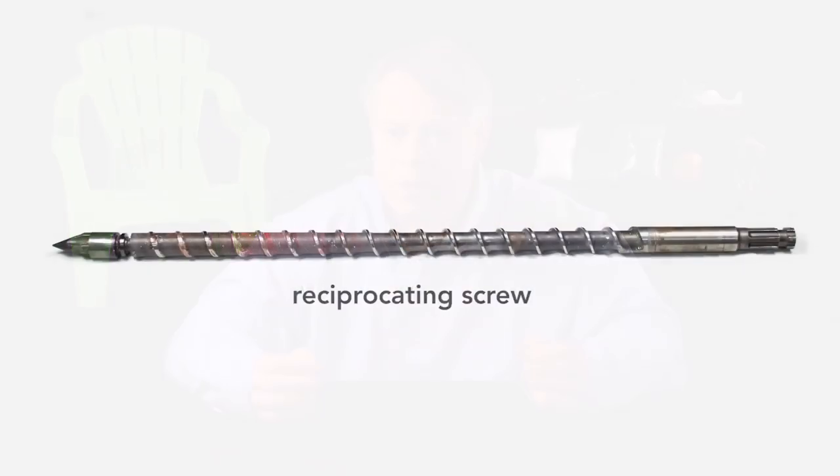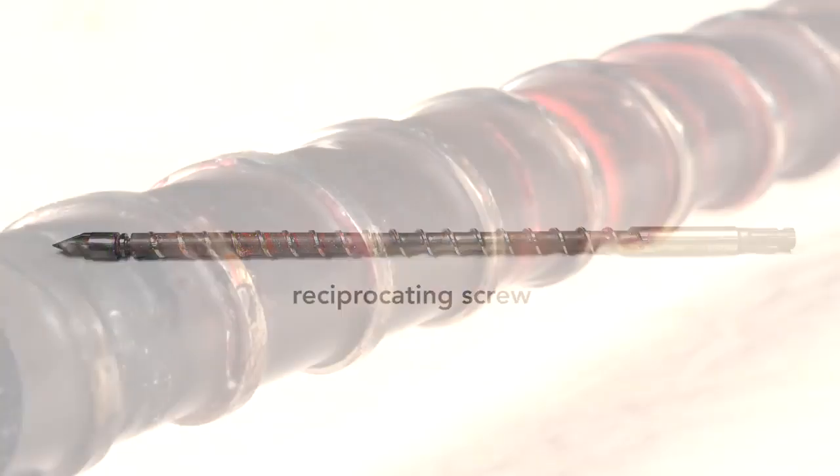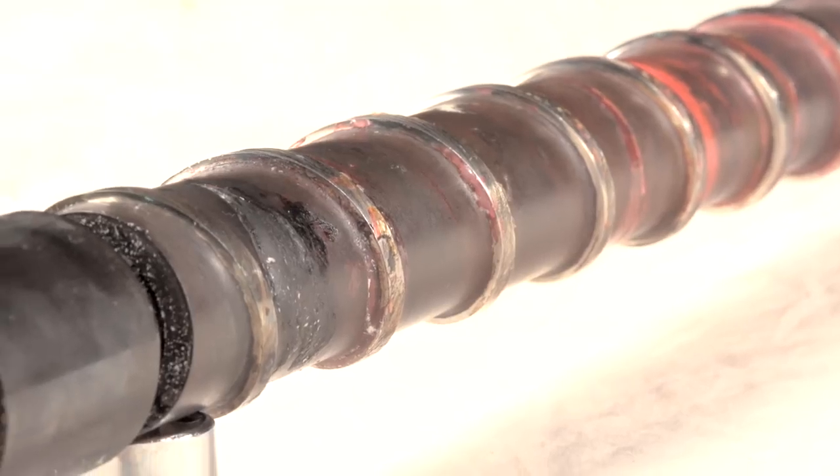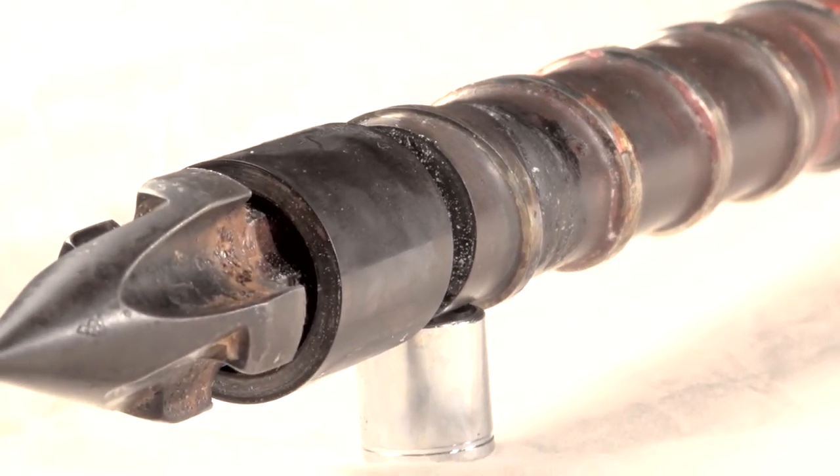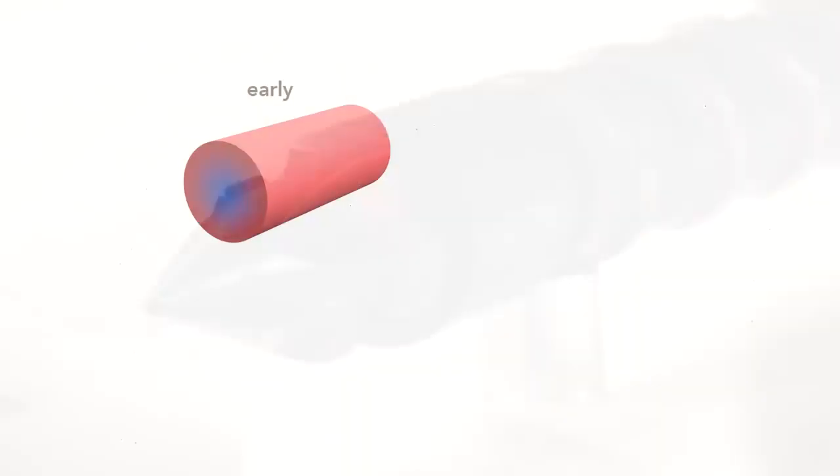The solution was this, the reciprocating screw, often regarded as the most important contribution that revolutionized the plastics industry in the 20th century. In the earlier plunger-style machines, plastic filled completely the cylindrical barrel. But as I showed you, the plastic was not at a uniform temperature. The reciprocating screw overcomes this in three ways.